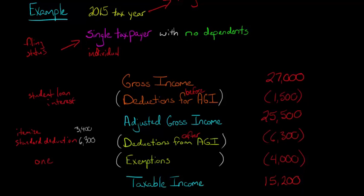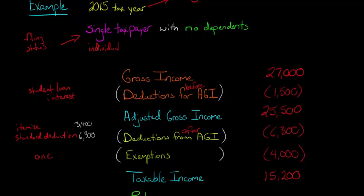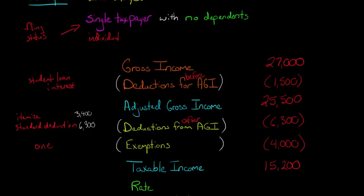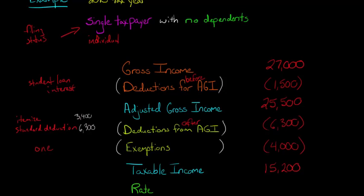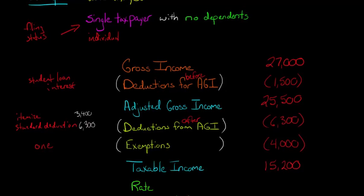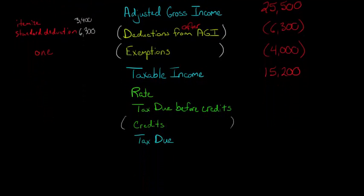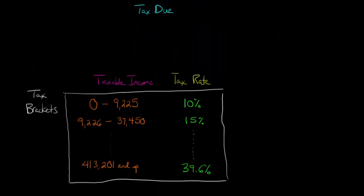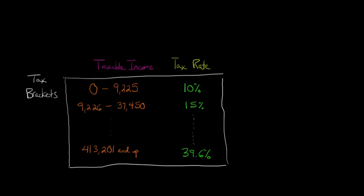But remember, we're not done — that's just the amount of income that's going to be taxed. Now we have to think about what rate we're going to use. This is where it gets a little complicated because we have a progressive income tax structure in the United States. To find the rate, we go to our tax tables and look at tax brackets.